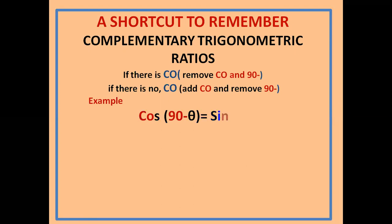The next is sin(90 minus θ): there is no 'co', so add 'co' and remove '90 minus'. Then you get cos θ.